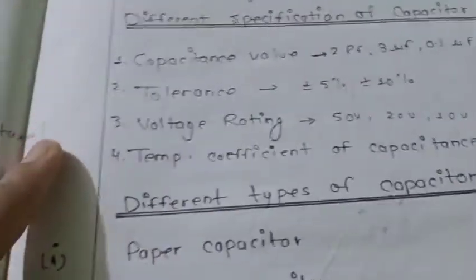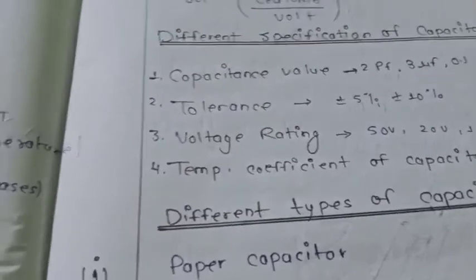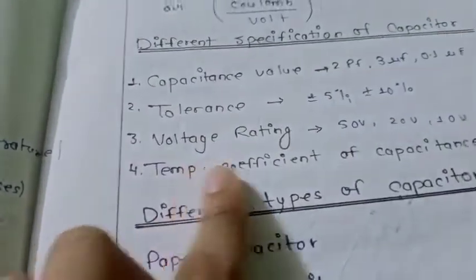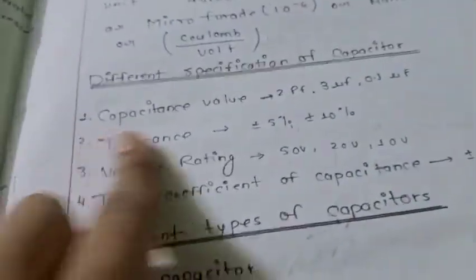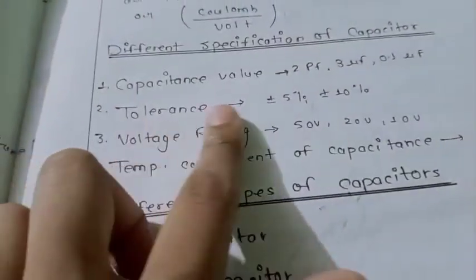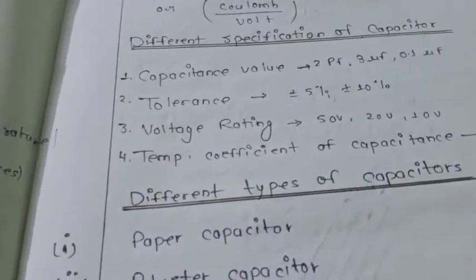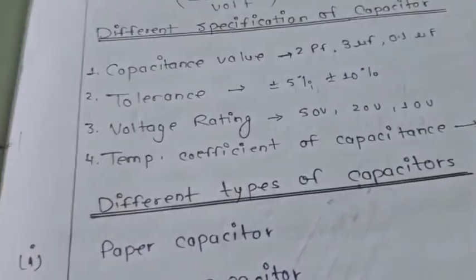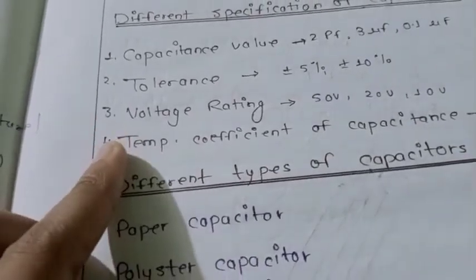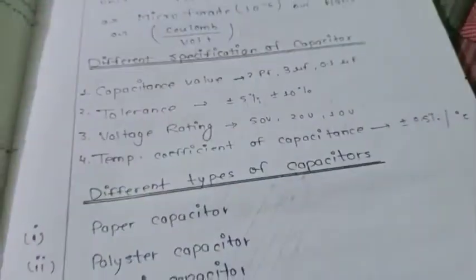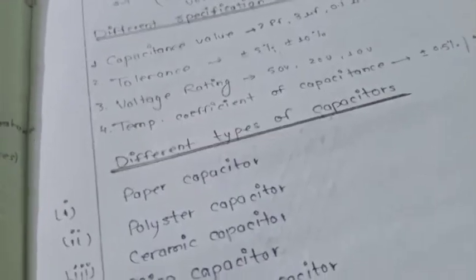Specifications of capacitor include the capacitance value, voltage rating, and tolerance. Tolerance indicates how much variation can be tolerated, such as plus minus 10 percent or plus minus 5 percent. Temperature coefficient is another specification, typically 0.5% per degree Celsius.